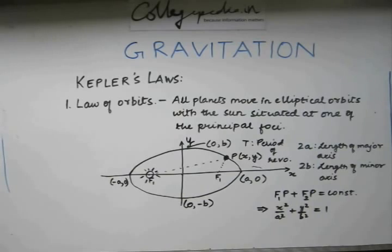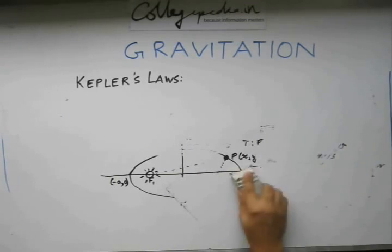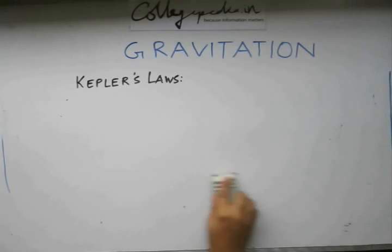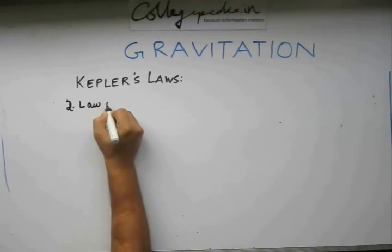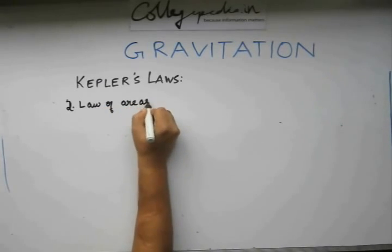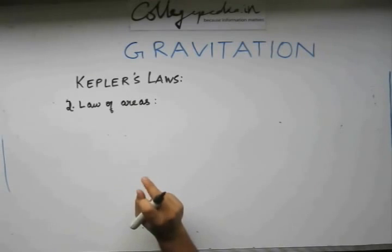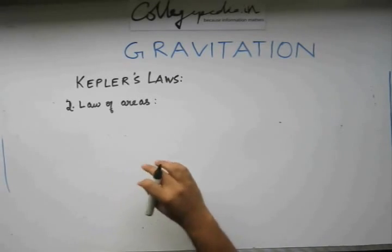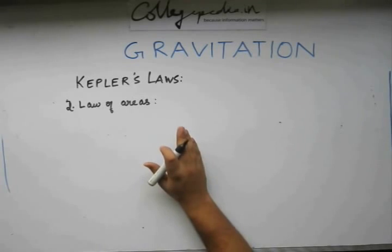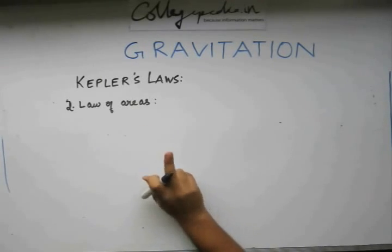Let us look at the second law. The second law of Kepler is known as the law of areas. According to this law, the line joining the planet and the sun will sweep out equal areas at equal intervals of time. This is the basic definition of this law. I repeat, the line joining the sun and the planet will sweep out equal areas in equal intervals of time.